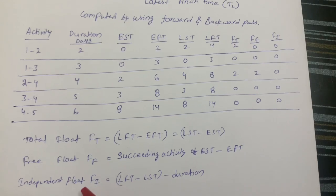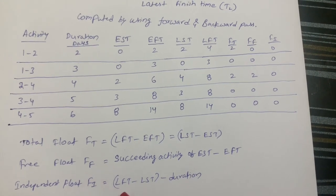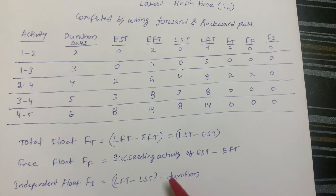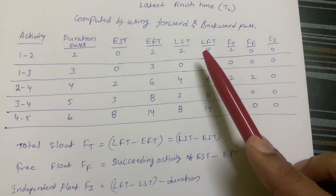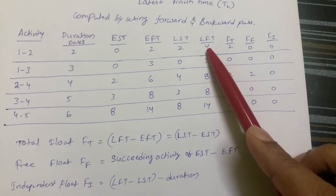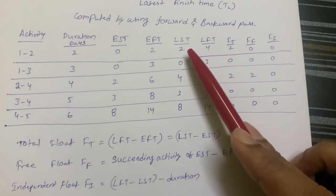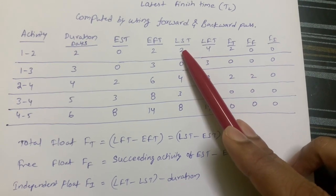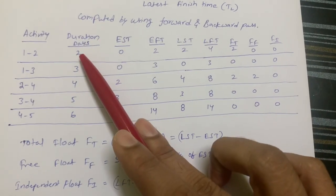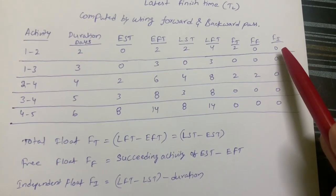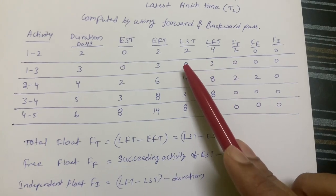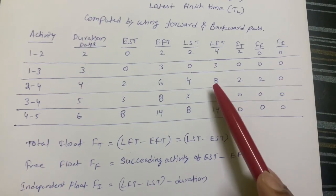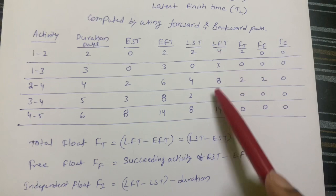Independent float formula is: LFT of preceding − LST of succeeding − duration. For example: 4 − 2 = 2, and 2 − 2 (duration) = 0. Similarly, 3 − 0 = 3, and 3 − 3 = 0. All independent float values come out to zero.